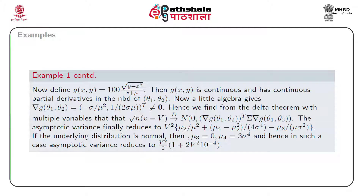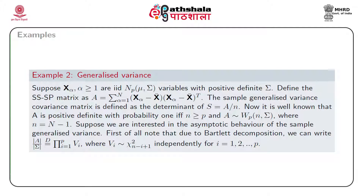We now pass on to another application of the delta theorem: finding the large sample distribution of generalized variance. Suppose x_alpha are iid p-variate normal observations with mean mu and dispersion matrix sigma, assumed positive definite. Define the SSSP matrix A as the summation over alpha from 1 to n of (x_alpha - x-bar)(x_alpha - x-bar)^T. The sample generalized variance is defined as the determinant of S, where S equals A divided by small n. It is well known that A has a Wishart distribution with p-variate parameters n and sigma, where small n equals capital N minus 1.